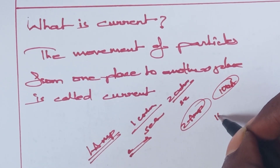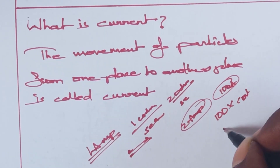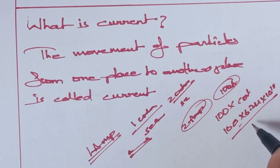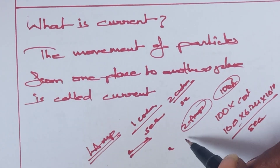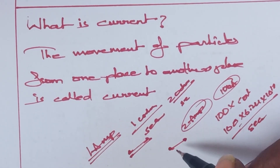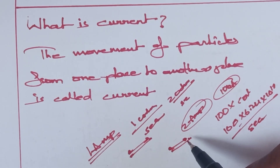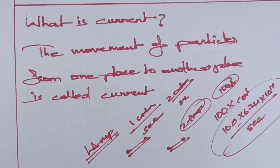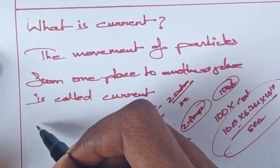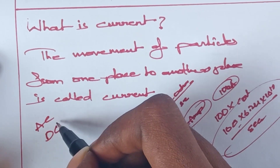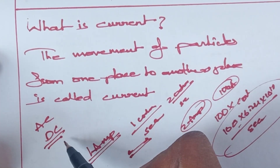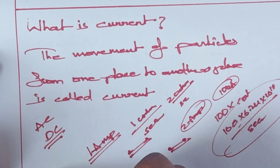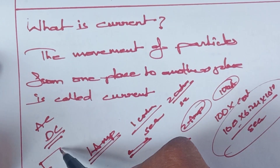Suppose 100 amps — that means 100 into 6.24 × 10^18 electrons are moving in a circuit per second.